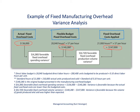Looking at the fixed overhead spending variance, which turns out to be favorable: the flexible budget says we expected to spend $140,280 on fixed overhead. Actual costs were $136,000. So we have a $4,280 favorable fixed overhead spending variance. As mentioned, we need to dive into the records to find out why our actual overhead costs were lower than the flexible budget.